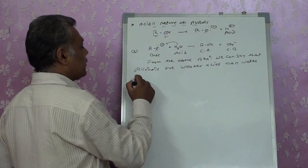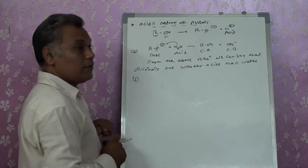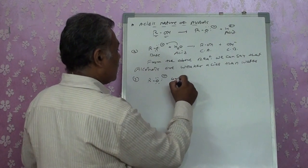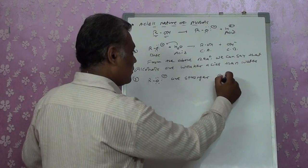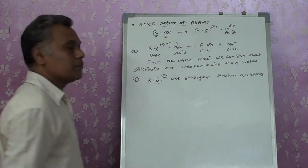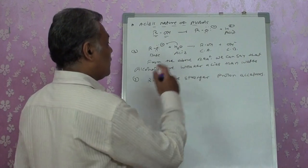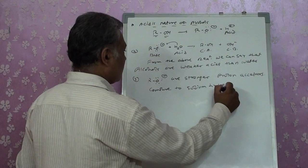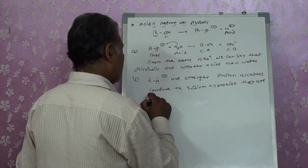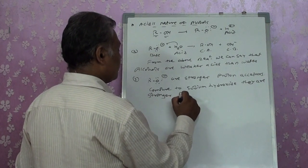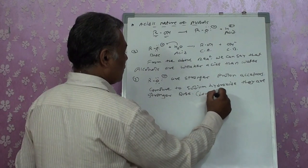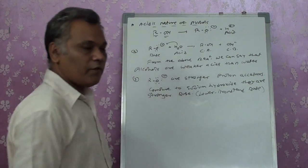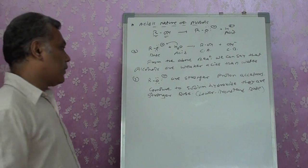From the above reaction we can see that alcohols are weaker acids than water. The third point is that alkoxides are stronger proton acceptors compared to sodium hydroxide — they are stronger bases. We can say that alkoxides also act as a Bronsted base.